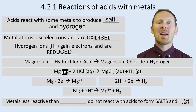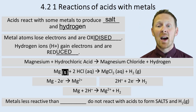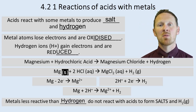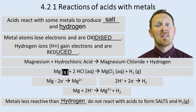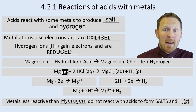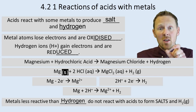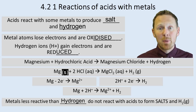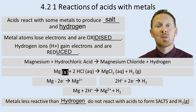So which metals react with acids? Metals that are less reactive than hydrogen do not react with acids to form salts and hydrogen. You can think of metals reacting with acids as a displacement reaction - if the metal is more reactive than hydrogen, it will displace the hydrogen and replace it in the metal salt. But if that metal is less reactive than hydrogen, it will not displace hydrogen from the salt.